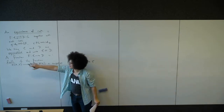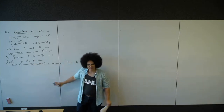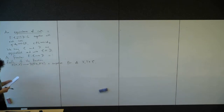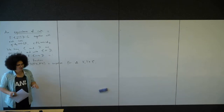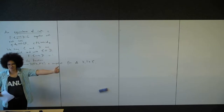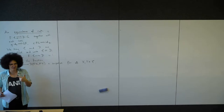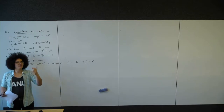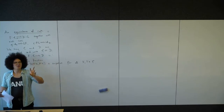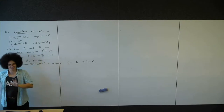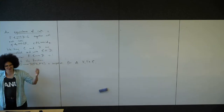That's how this definition lines up with what people would usually use to say a full subcategory. For example, the subcategory of abelian groups in the category of groups is full, because every group homomorphism between abelian groups is still a group homomorphism between abelian groups when you remember that they're abelian.